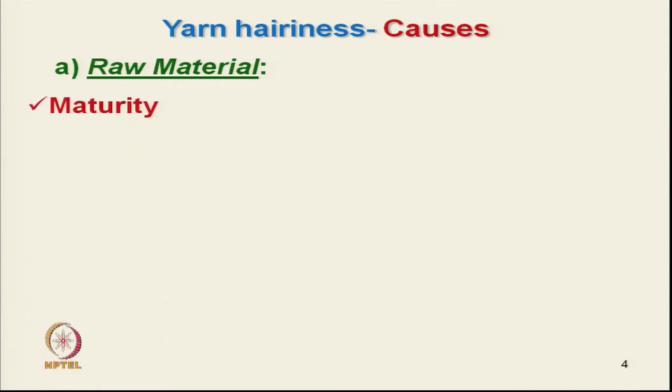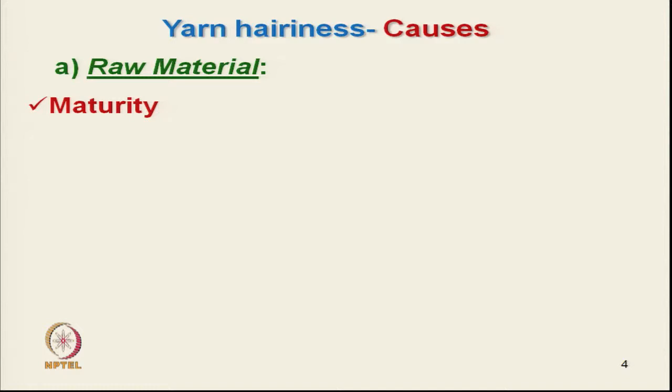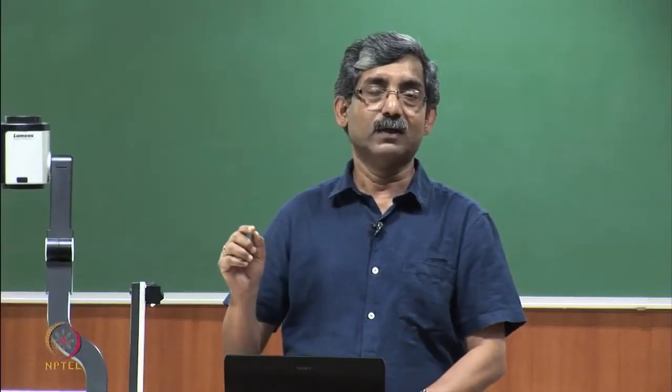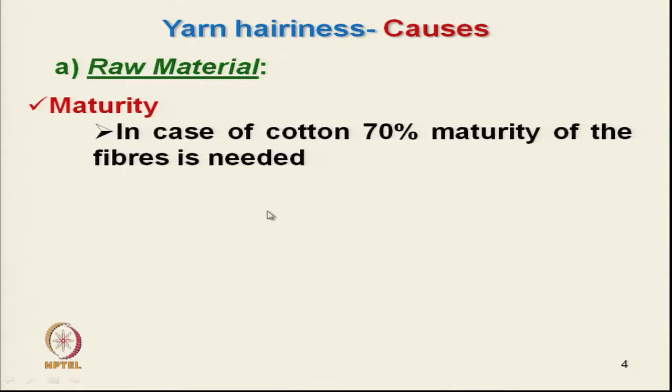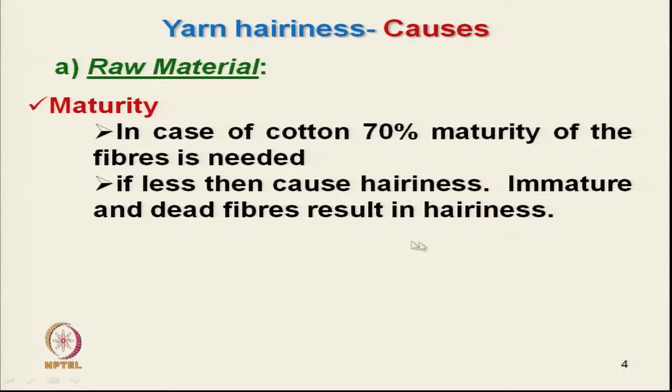Now we will discuss the various causes of hairiness. For cotton yarn, the first reason is fiber maturity. It has been observed that immature cotton results in hairiness because it does not get opened properly — it does not penetrate inside the yarn structure and remains on the surface, creating hairiness. Around 70% maturity of the fibers is needed; if maturity is less, immature and dead fibers result in hairiness.